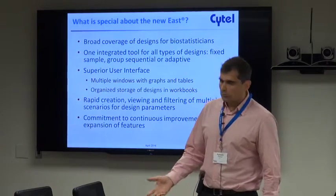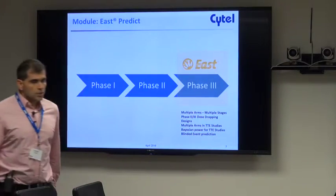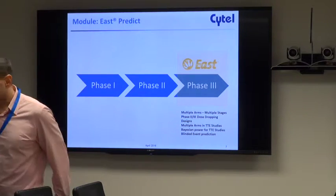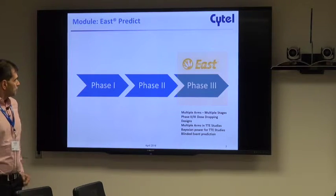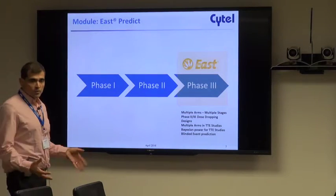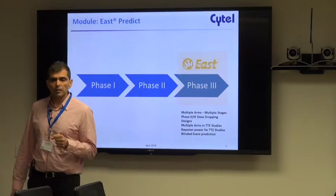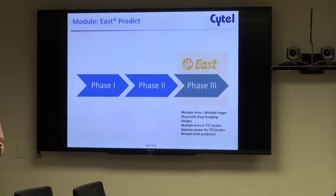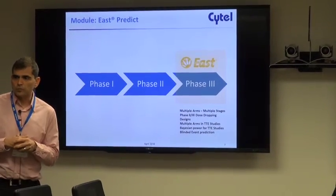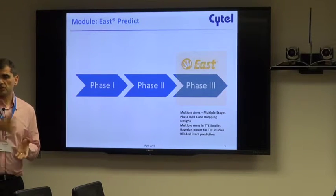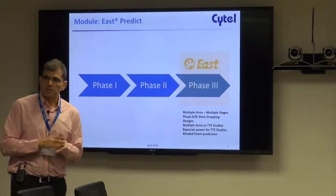With that, you also get our commitment to extending the software yearly. The version you have access to — either through Citrix or through the local installation link provided — has added the following features. Traditionally EAST has been a phase three type of software, and we have added multiple arms and multiple stages, either in a group sequential fashion or in a phase two/phase three dose-dropping approach. You begin with a number of doses versus control; at the first interim look you decide to drop some, moving the best-behaving doses into the next stage and then combining the results.